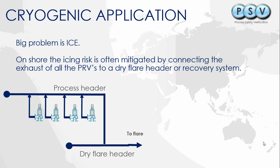Onshore, this icing risk is often mitigated by connecting to a dry flare header — a flare header that doesn't have any moisture in it — therefore reducing the likelihood of ice buildup in the exhaust system or in the relief valve.